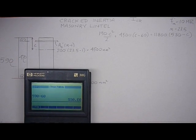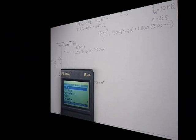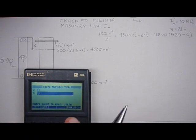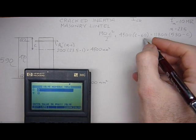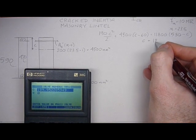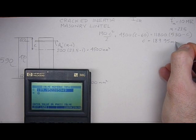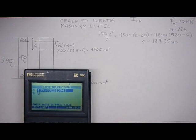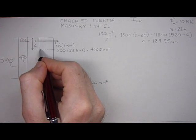So to solve for C, I have just a solve function in my calculator. And I'll just input the equation in. So now I have it in the calculator and all I have to do is just solve. C is going to equal 189.95 millimeters. So that's this distance from here to here, 189.95.